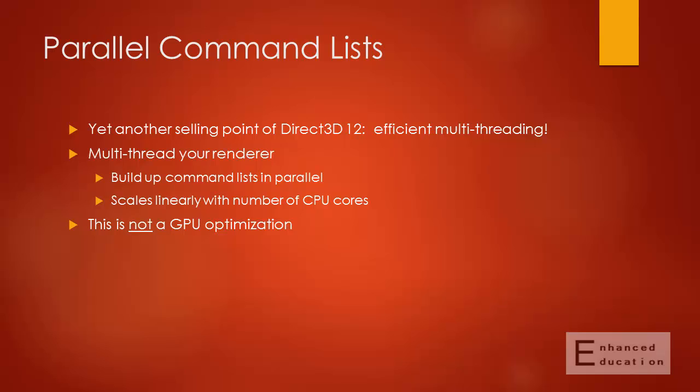And yet another reason — probably the biggest reason — why we like DirectX 12 is that it's much more CPU-friendly, especially when it comes to multi-core CPUs. There's no reason not to parallelize your rendering code as much as it makes sense now. Each CPU core can be building up a command list for execution, and then the main thread can execute them all at once. This is nearly a linear speed-up — in other words, if you have four cores, your render thread will be done in a fourth of the time.